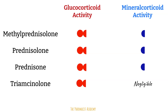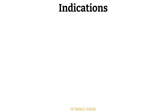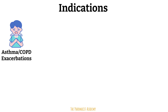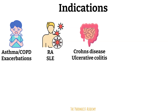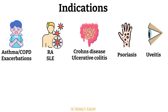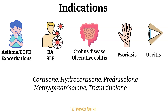Based on their activity profiles, let's see what diseases and conditions these agents are used for. Acute inflammatory and allergic conditions like anaphylaxis, asthma exacerbations, and COPD exacerbations; autoimmune inflammatory diseases like rheumatoid arthritis or lupus; GI disorders like ulcerative colitis and Crohn's disease; and dermatologic and ophthalmologic disorders like uveitis, contact dermatitis, and psoriasis. For these conditions, agents with glucocorticoid activity and little to no mineralocorticoid activity are preferred.